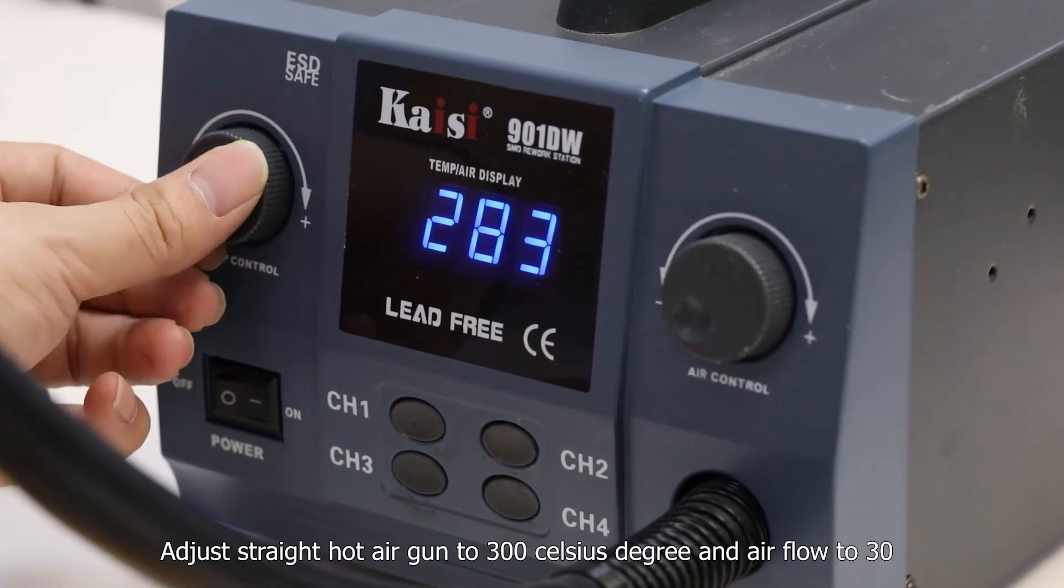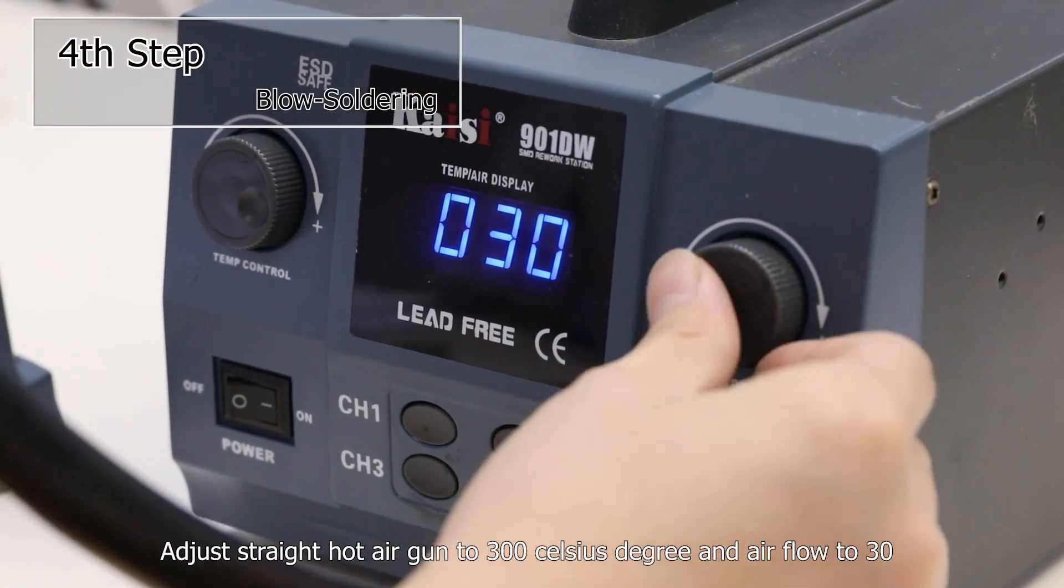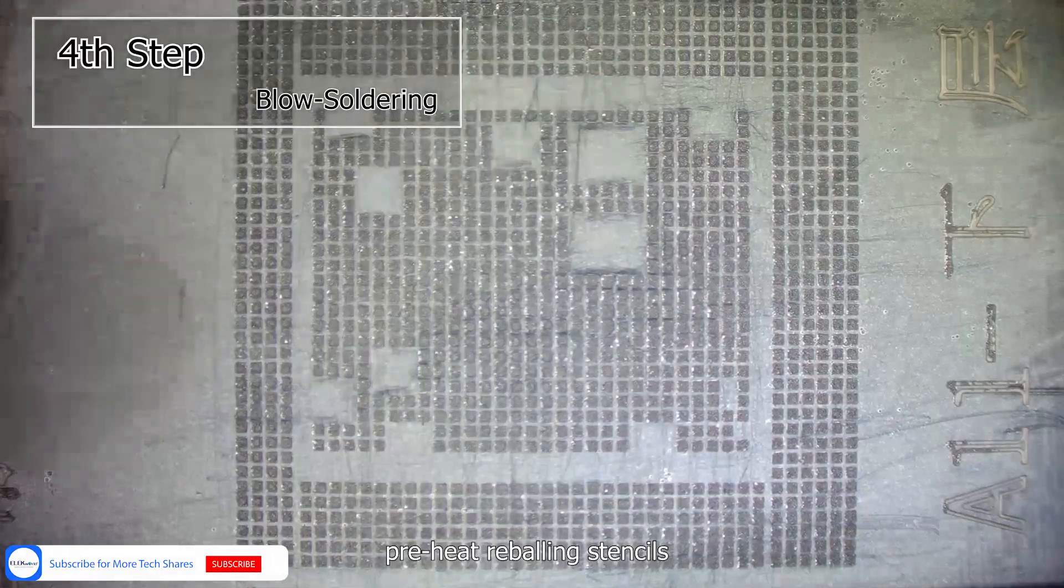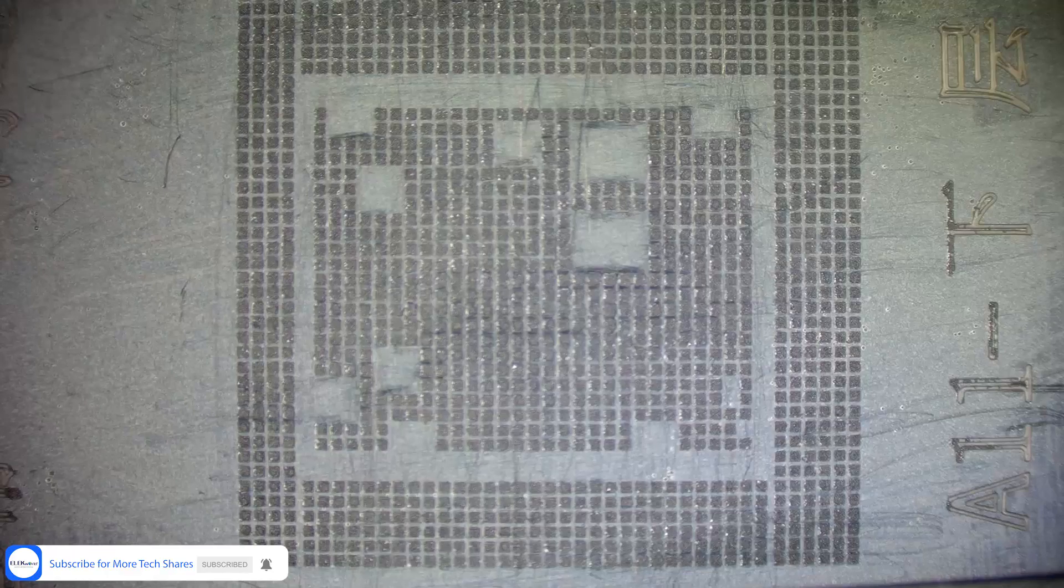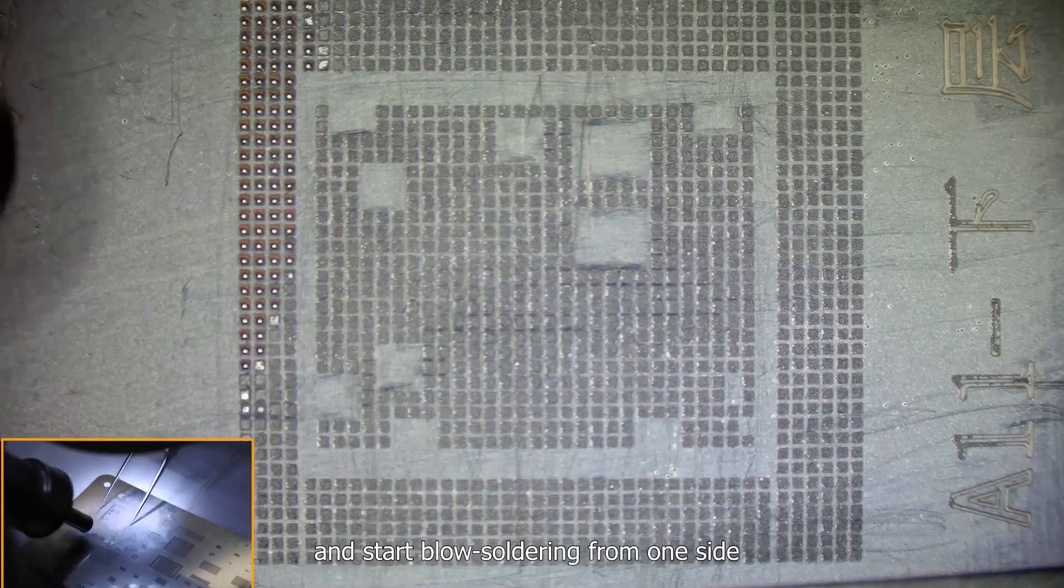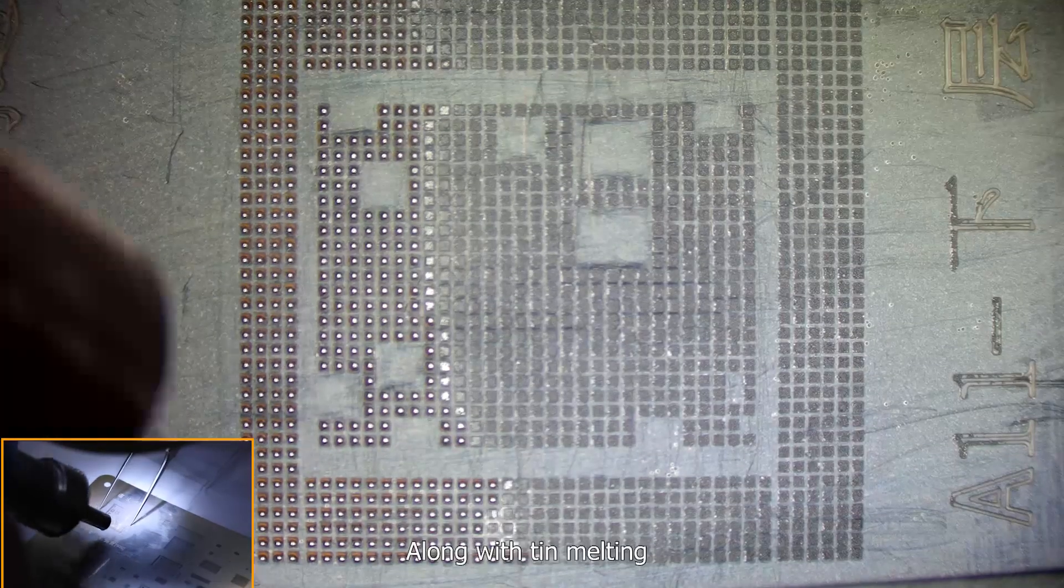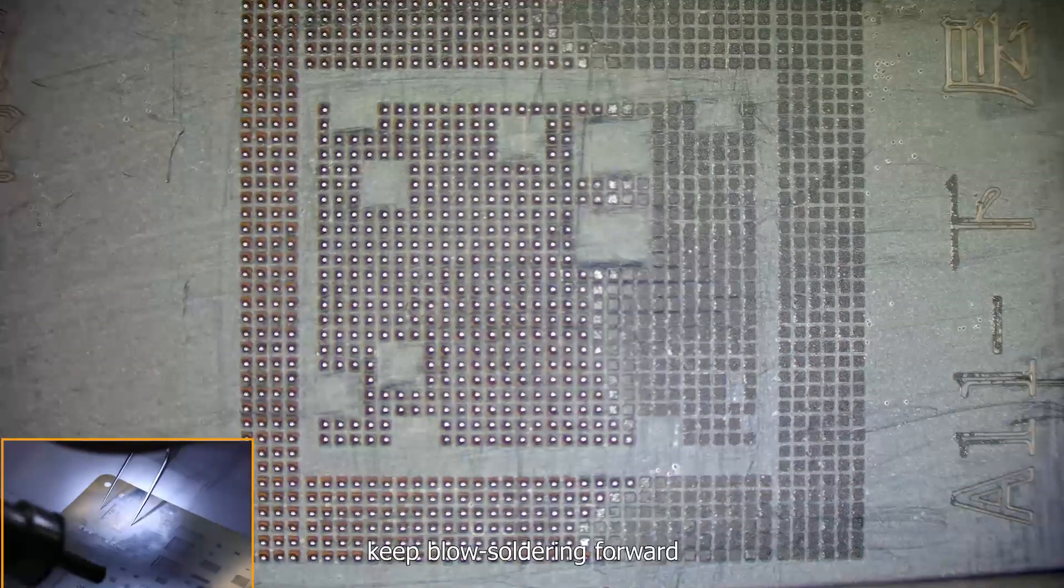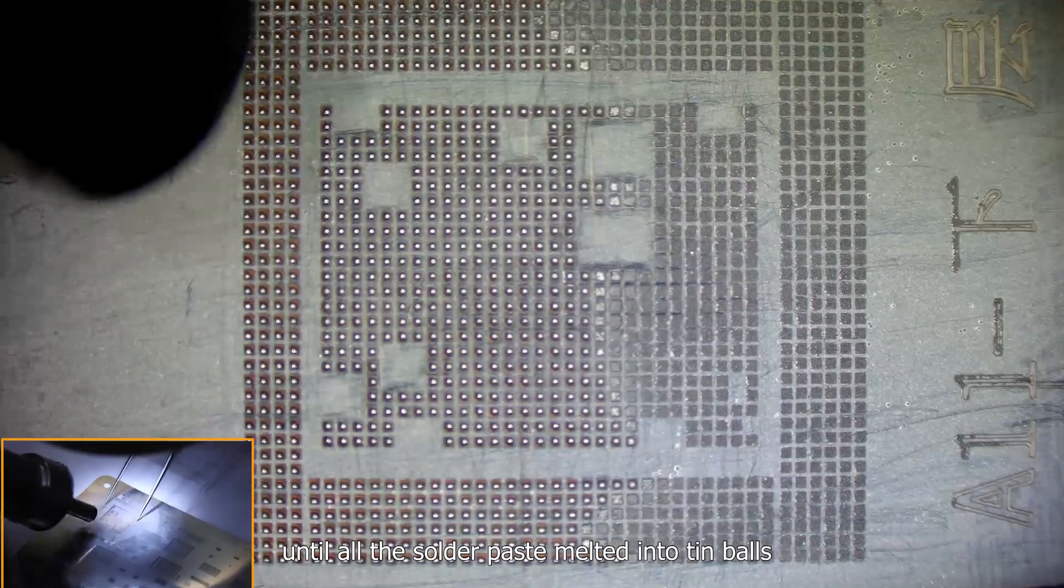Adjust the hot air gun to 300 Celsius degrees and airflow to 30. Preheat reballing stencils and start blow soldering from one side. Along with tin melting, keep blow soldering forward until all solder paste melts into tin balls.